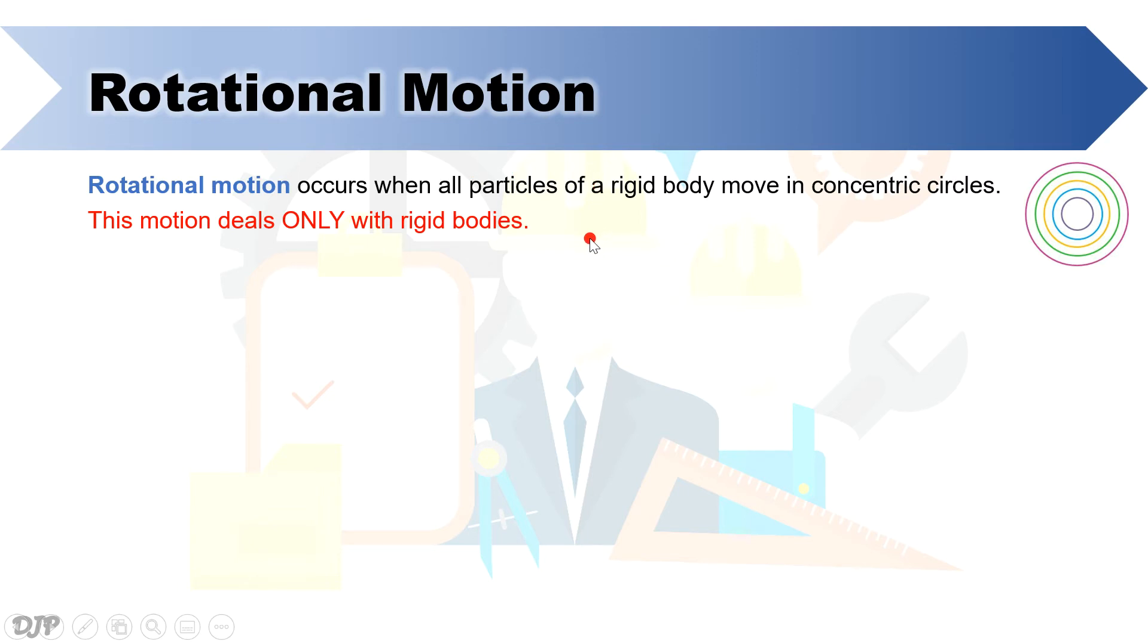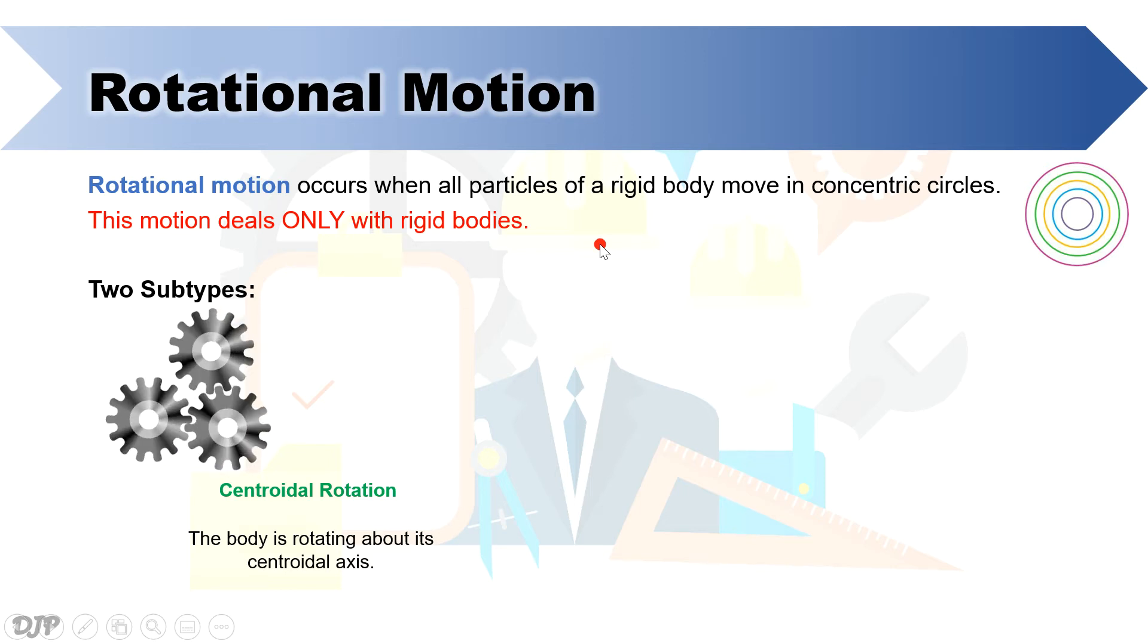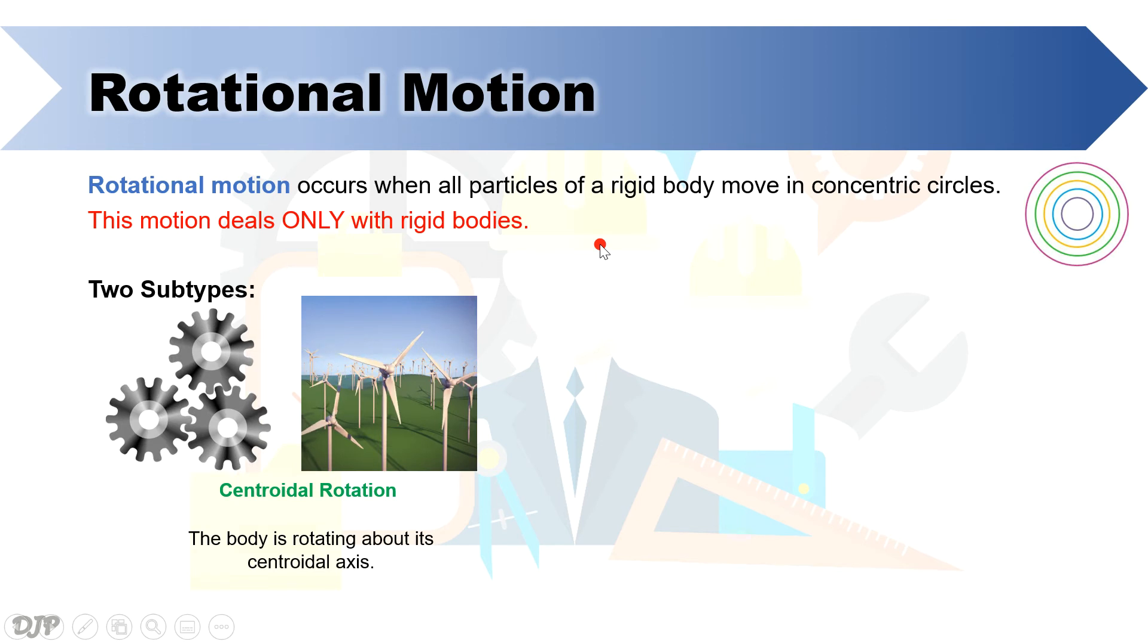Like translation, rotational motion has also its own two subtypes. The first one is centroidal rotation, in which, as its term implies, a body rotates about its centroidal axis. Examples of that are the spinning of gears and the rotating turbine of a wind energy system.